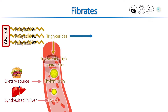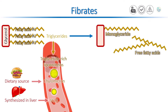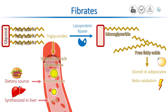Triglycerides are broken down into monoglycerides and fatty acids by an enzyme called lipoprotein lipase. Fatty acids are picked up by cells, where they can be stored in adipose tissue in the form of triglycerides, or undergo beta-oxidation for cellular energy production. Lipoprotein lipase is the rate-limiting enzyme in the removal of triglycerides from the bloodstream. Its activity is inhibited by apolipoprotein C3, also known as APO C3.